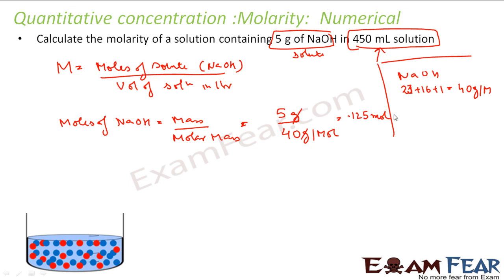What is the volume of solution? Volume of solution in liters. 450 mL is what? 450 mL is nothing but 450 divided by 1000 liters. Let's keep it. So we will just put in this formula, equation number one. So if you put the values in equation number one.